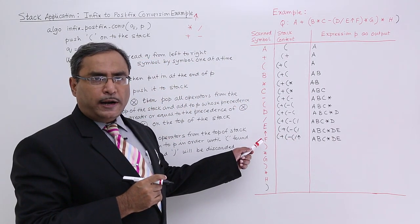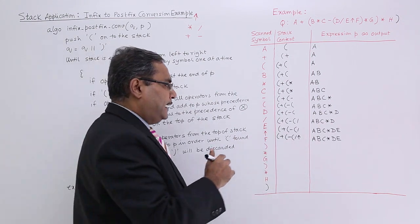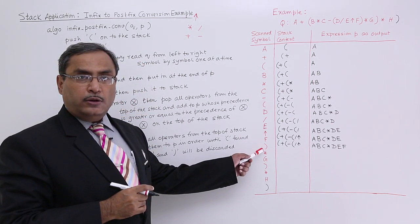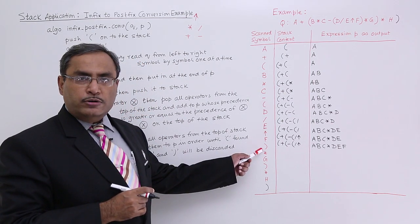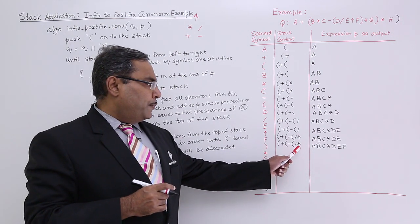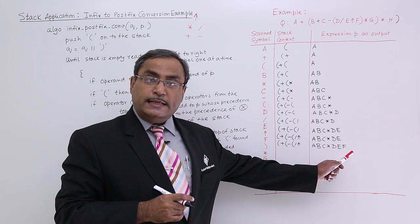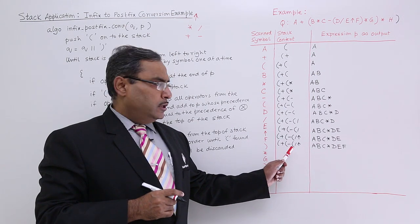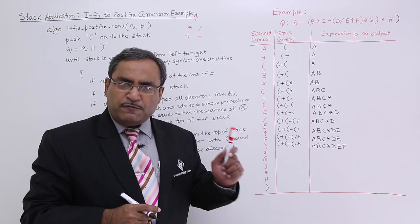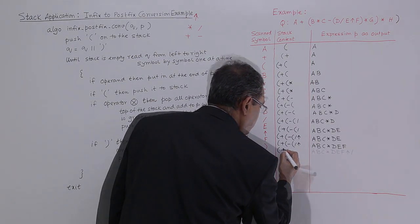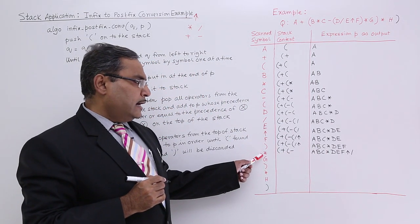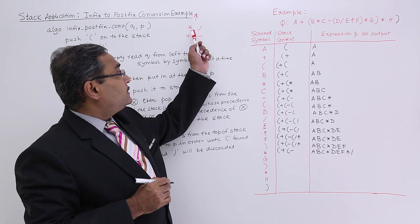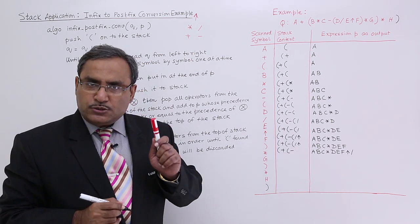A closing bracket is encountered for the first time. All operators from the top of the stack are popped and put in P in the same order until an opening bracket is encountered. The opening and closing brackets disappear from the system. Next, a star is obtained — plus has lower precedence than star, so star is pushed and minus is not popped.